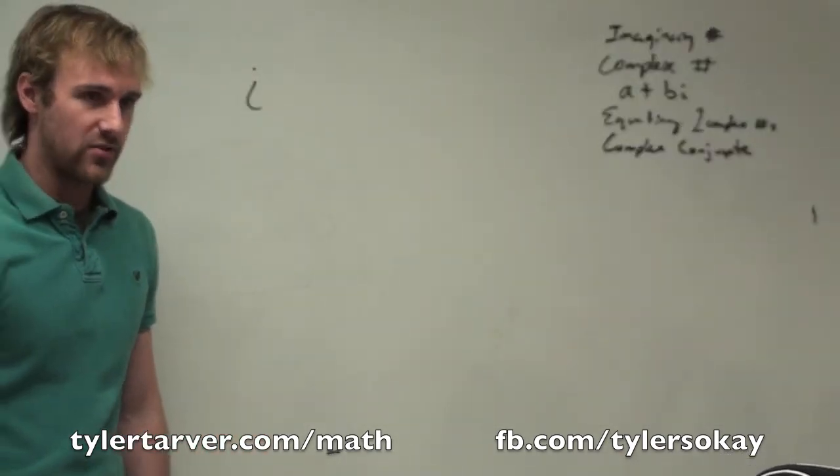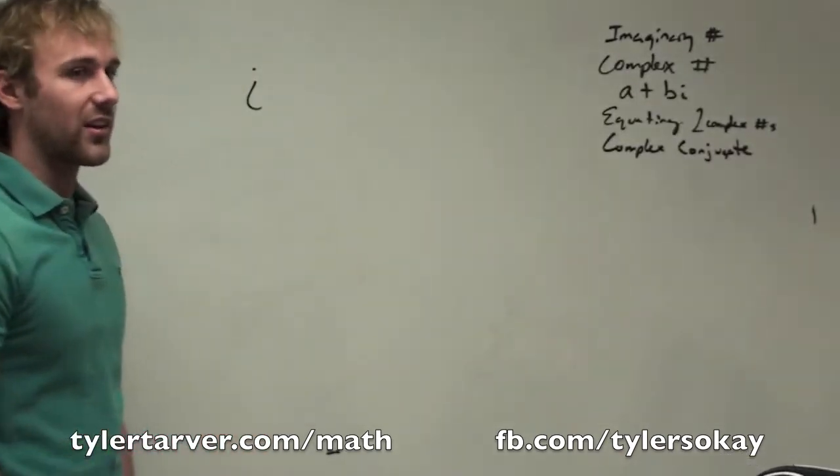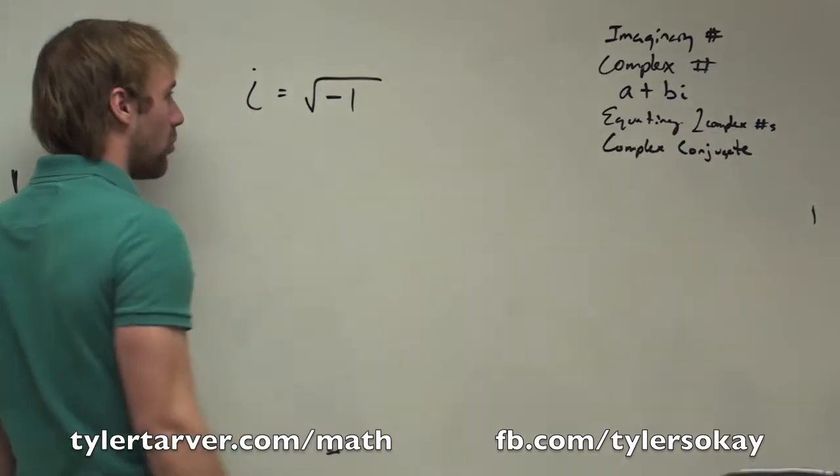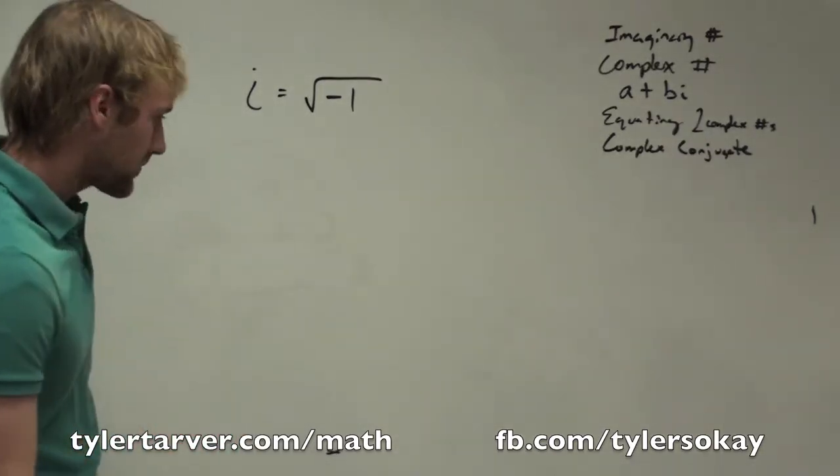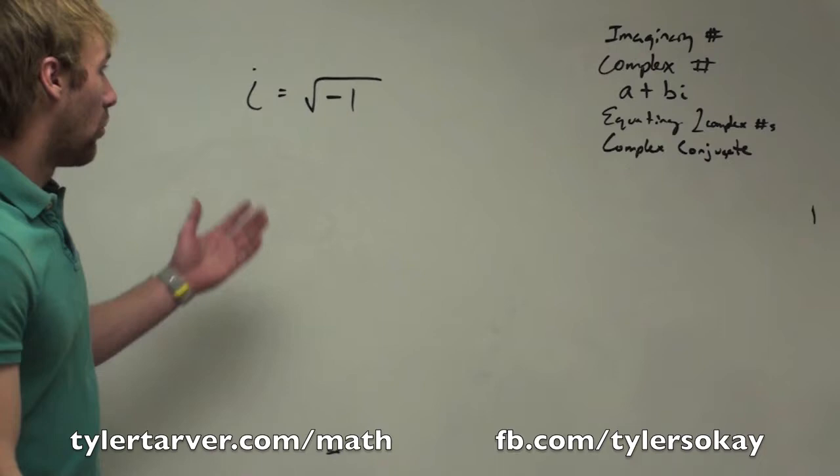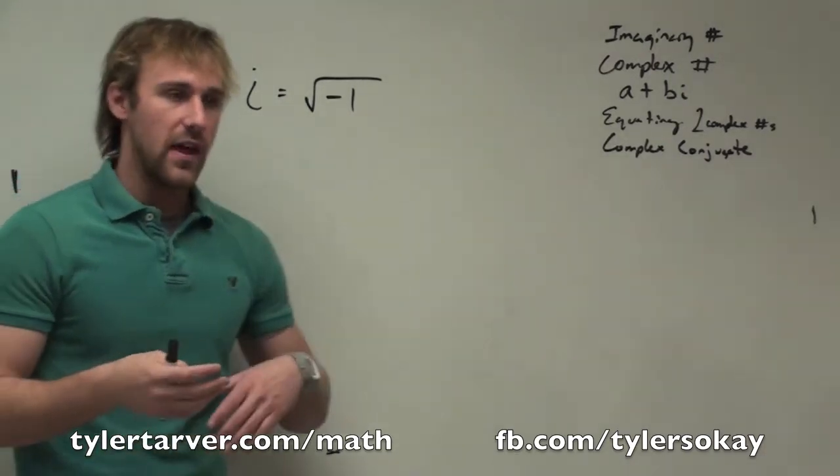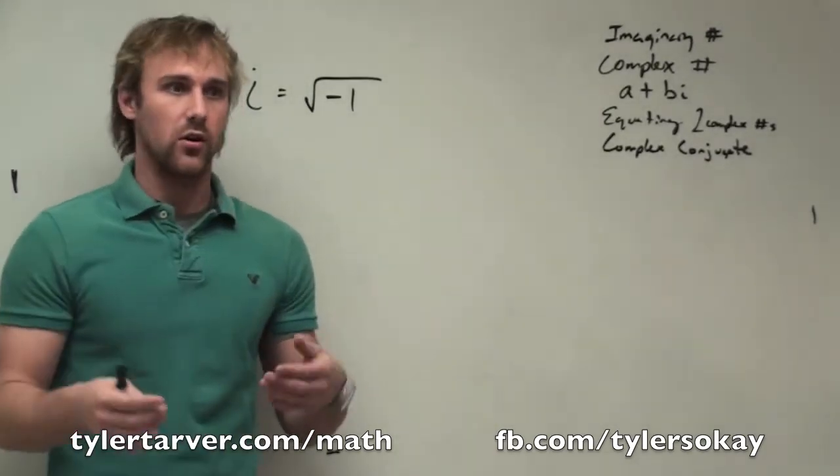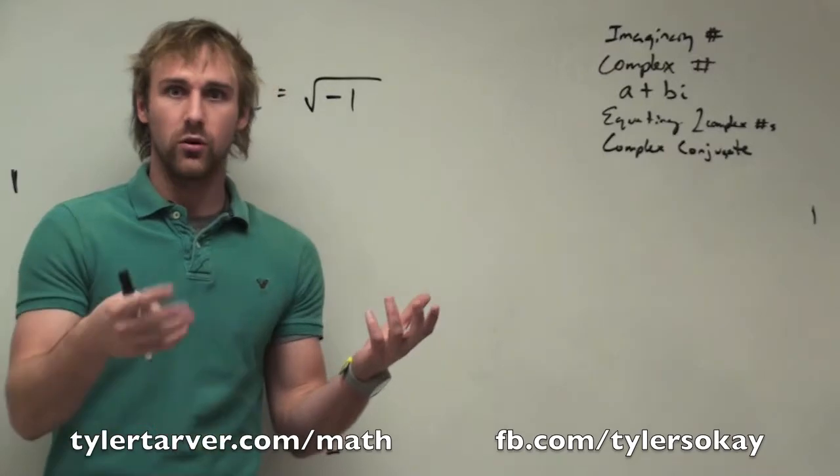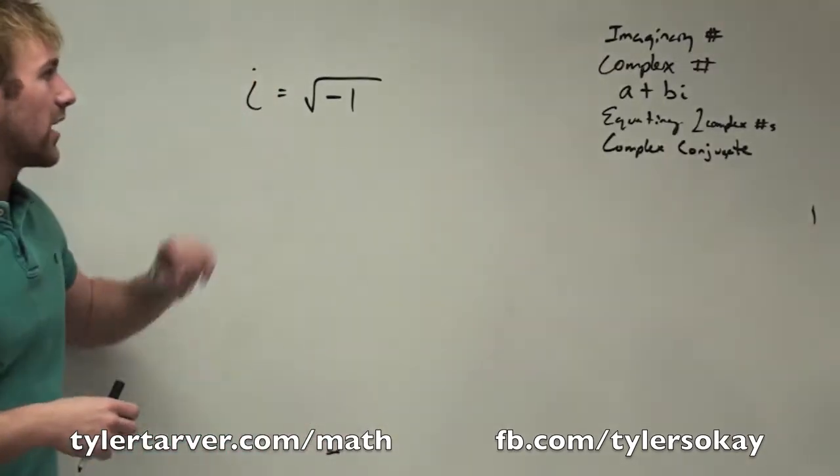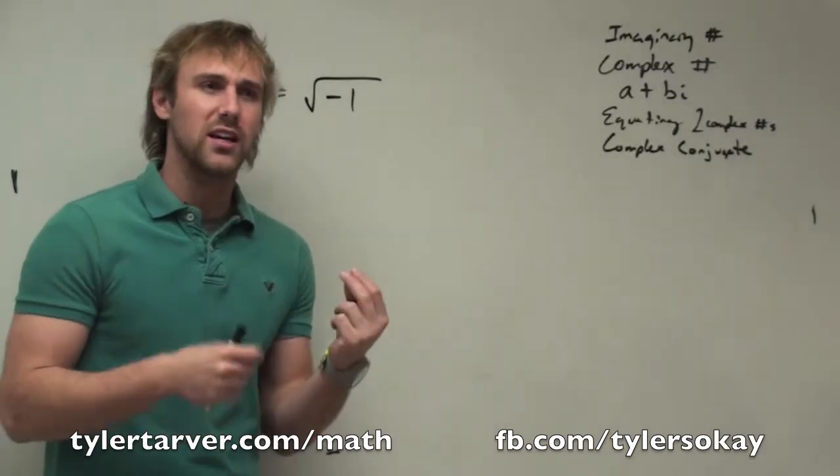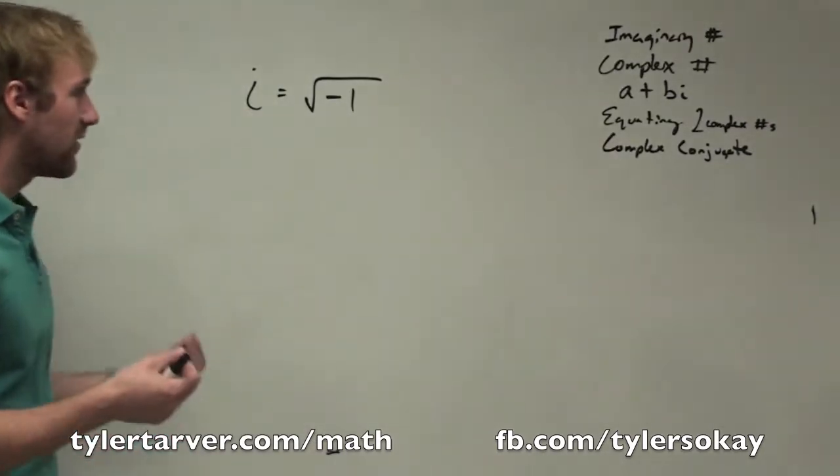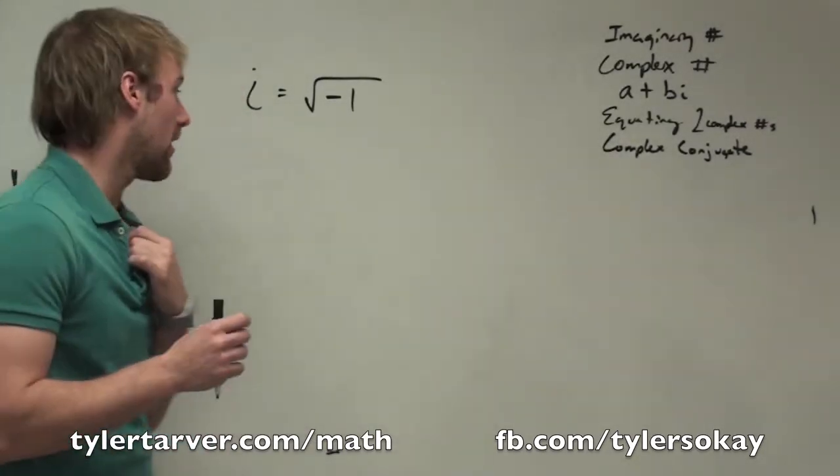i is the first letter in imaginary. Something imaginary doesn't exist. So when you see i, that is the equivalent of radical negative 1. Why is that imaginary? A radical means what times itself equals this number. Radical 4, what times itself equals 4? 2. So 2 is the equivalent of radical 4. i is the equivalent of radical negative 1 because what times itself can equal a negative? Nothing. So anytime you have a negative under the radical, you're going to have to do an imaginary number to get it out.